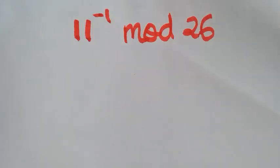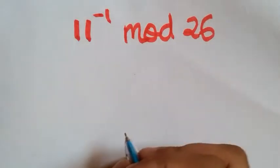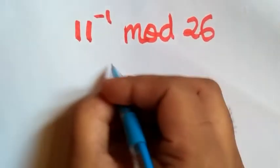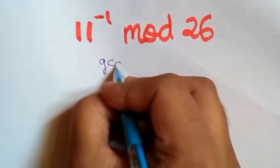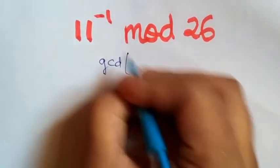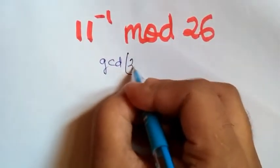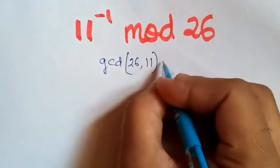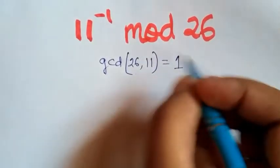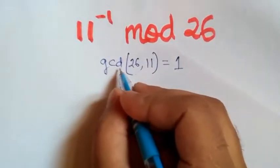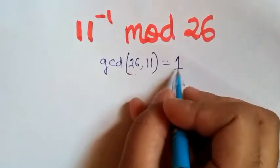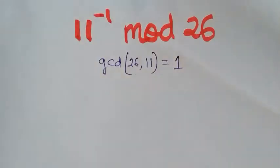We are going to find 11 inverse mod 26. First of all, we calculate GCD of 11 and 26, which is 1. The greatest common divisor is 1. Now, according to the Extended Euclidean Algorithm, we proceed.